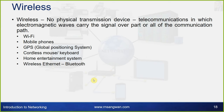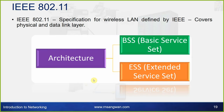Wireless networking uses no physical transmission device. Telecommunications carry electromagnetic waves over part or all of the communication path — examples include Wi-Fi, mobile phones, GPS, cordless mouse and keyboard, home entertainment systems, and Bluetooth. The IEEE 802.11 standard defines wireless LANs, covering the physical and data link layers. Its architecture consists of a Basic Service Set (BSS) and an Extended Service Set (ESS).